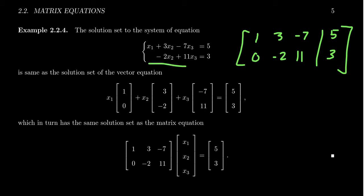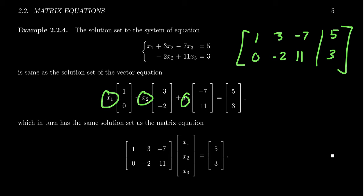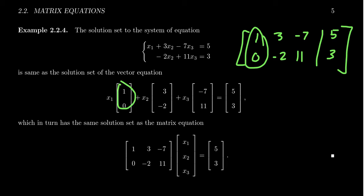On the other hand, this linear system is equivalent to the vector equation x1 times the vector (1, 0), plus x2 times the vector (3, negative 2), plus x3 times the vector (negative 7, 11), equals (5, 3). The coefficients in this linear combination are the unspecified variables — the exact same variables as in the linear system. The vectors in play coincide with the columns of the augmented matrix: (1, 0), (3, negative 2), and (negative 7, 11).